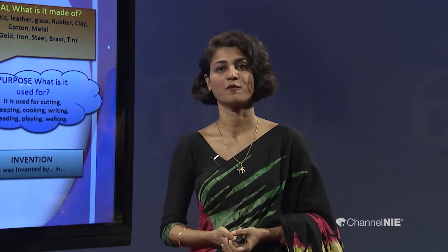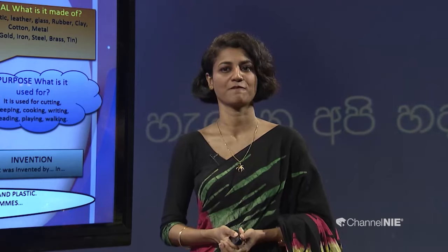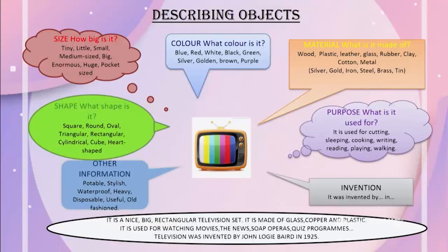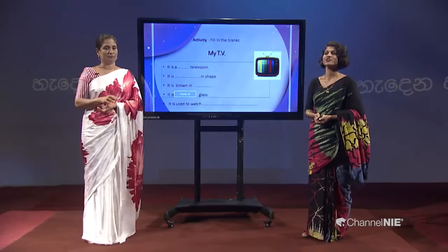Now you know how to describe an object. Let's go through an example. If I ask you to describe this television, you can write something like: It is a nice, big, rectangular television set. It is made of glass, copper, and plastic. It is used for watching movies, the news, soap operas, and quiz programs. Television was invented by John Logie Baird in 1925.